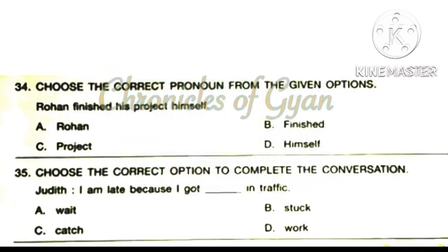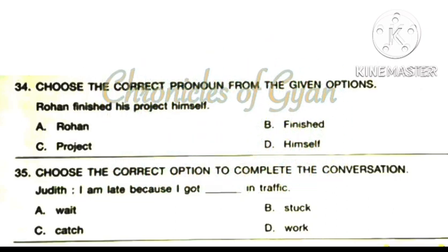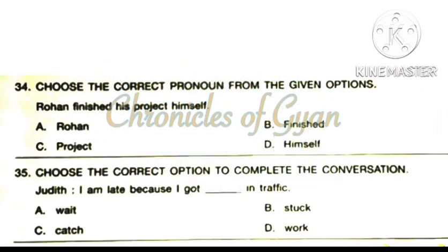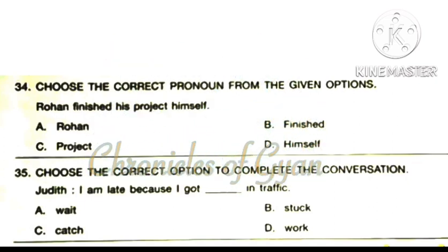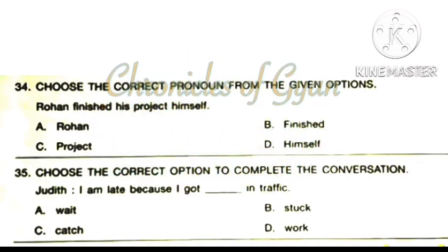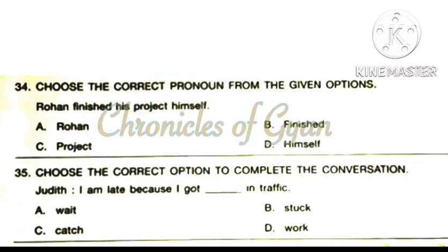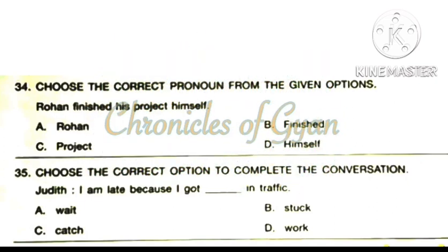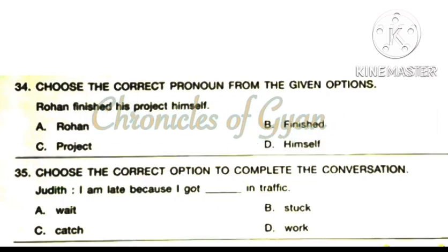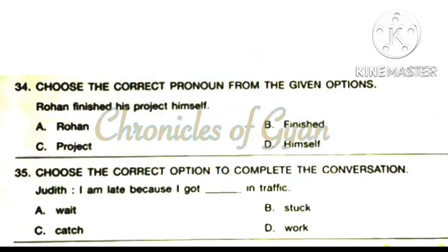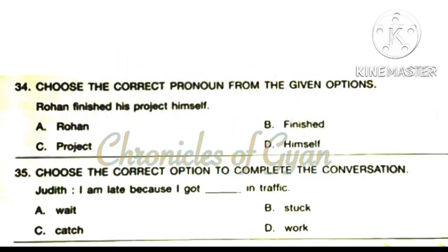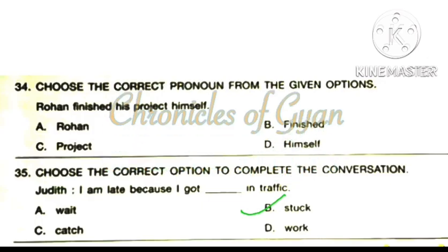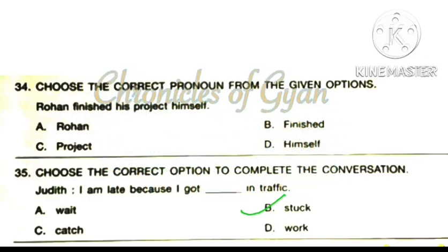Question 35: Choose the correct option to complete the conversation. Judith: I am late because I got dash in the traffic. The correct answer is option B: Stuck. Stuck means not able to move. I am late because I got stuck in traffic.